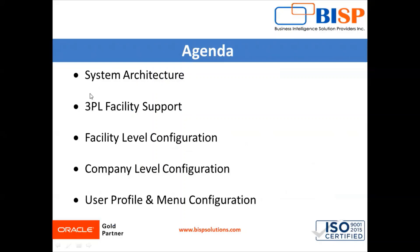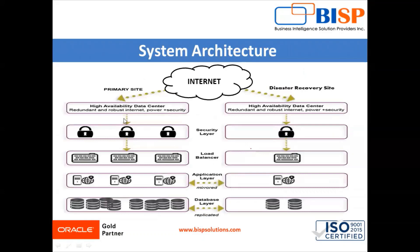We can set the equipment investments by coordinating and optimizing resource usage and material flows. In today's session we are going to look at the system architecture in WMS, 3PL facility support — that is third-party logistic facility support — facility level configuration, company level configuration overview, and at the end user profile and menu configuration.